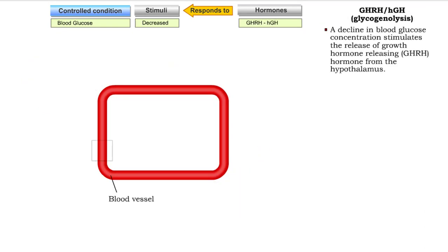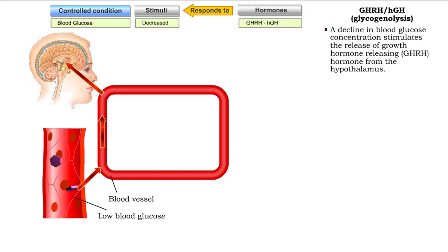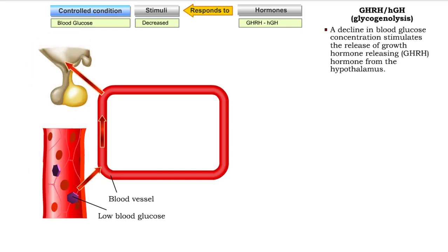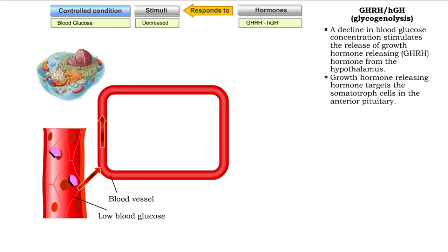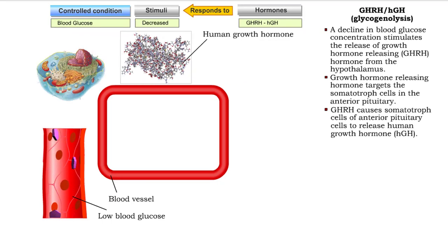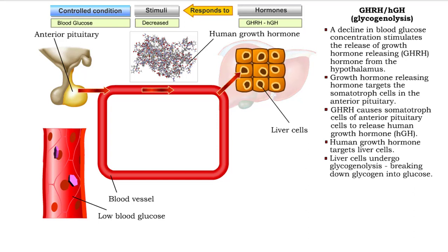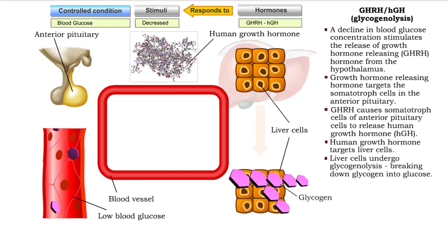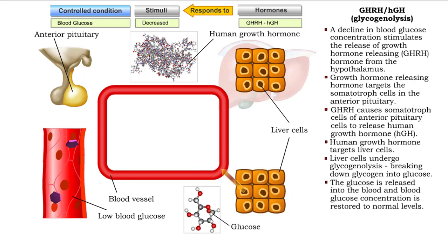A decline in blood glucose concentration caused by increased metabolic needs or physical exertion stimulates the release of growth hormone-releasing hormone from the hypothalamus. The releasing hormone targets the somatotroph cells in the anterior pituitary to secrete human growth hormone. Human growth hormone targets liver cells and causes them to undergo glycogenolysis, a process that breaks down glycogen into glucose. The glucose is released into the blood and blood glucose concentration is restored to normal levels.